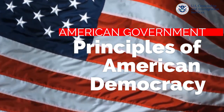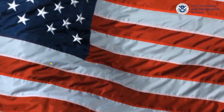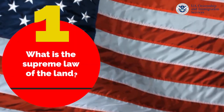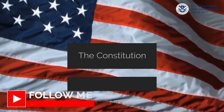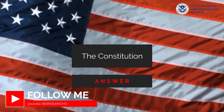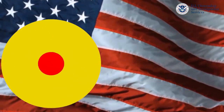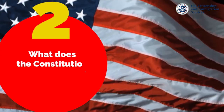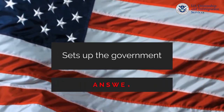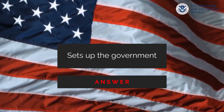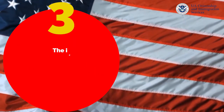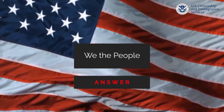Principles of American Democracy. What is the supreme law of the land? The Constitution. What does the Constitution do? It sets up the government. The idea of self-government is in the first three words of the Constitution. What are these words? We the people.